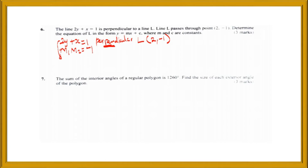We have to write that equation in the form y equals mx plus c. Taking x to the other side gives us negative x plus 1, then dividing both sides by 2 gives y equals negative one-half x plus one-half. So from this equation, the value of m — the gradient — is negative one-half.